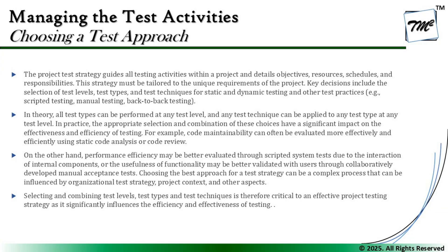Diving into the syllabus: the project test strategy guides all testing activities within a project and details objectives, resources, schedules, and responsibilities. The strategy must be tailored to the unique requirements of the project. Key decisions include the selection of test levels, test types, and test techniques for static and dynamic testing, and other test practices like scripted testing, manual testing, and back-to-back testing. In theory, all test types can be performed at any test level and any test technique can be applied to any test type at any level. In practice, the appropriate selection and combination of these choices has significant impact on the effectiveness and efficiency of testing — for example, code maintainability can often be evaluated more effectively using static code analysis or code review.